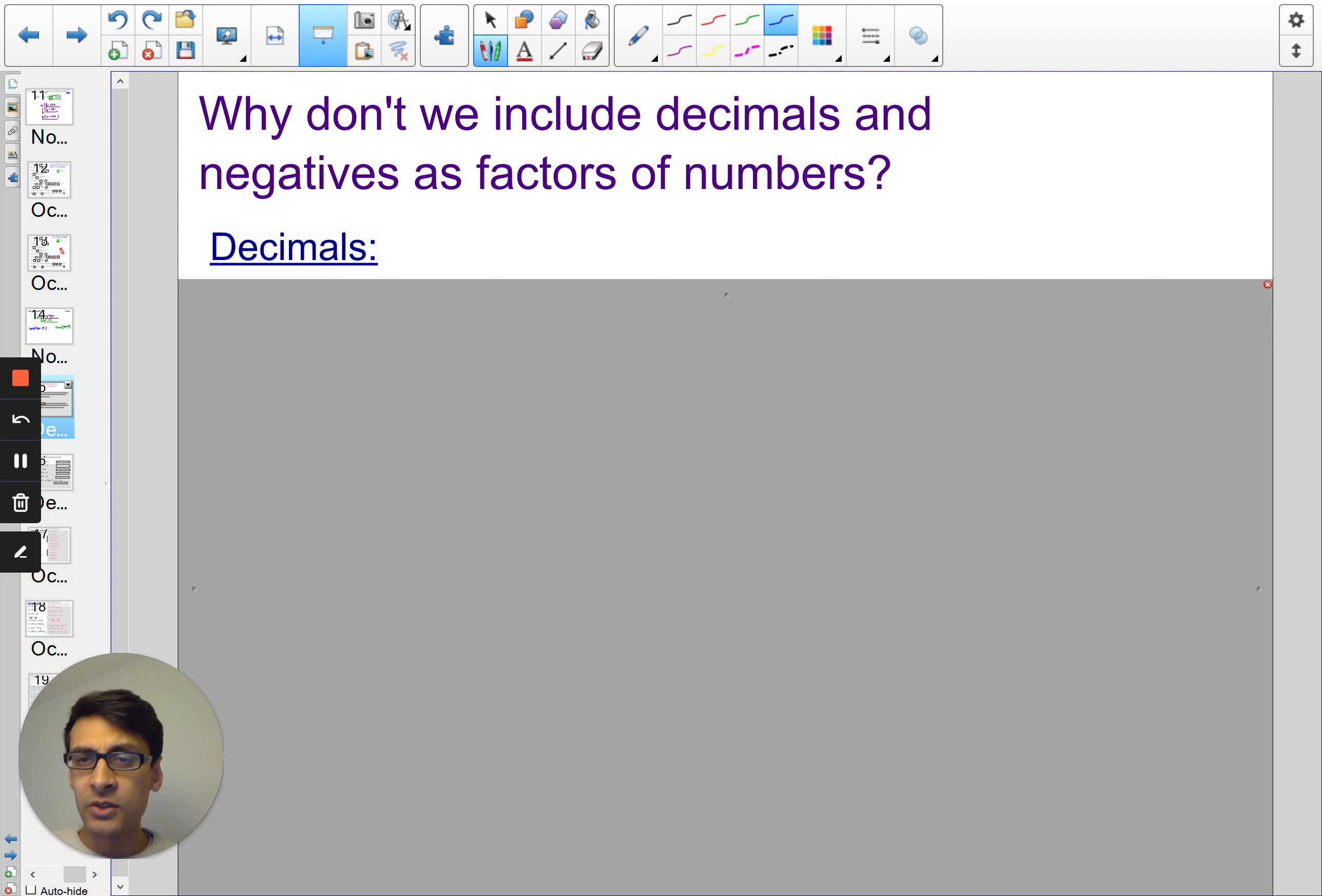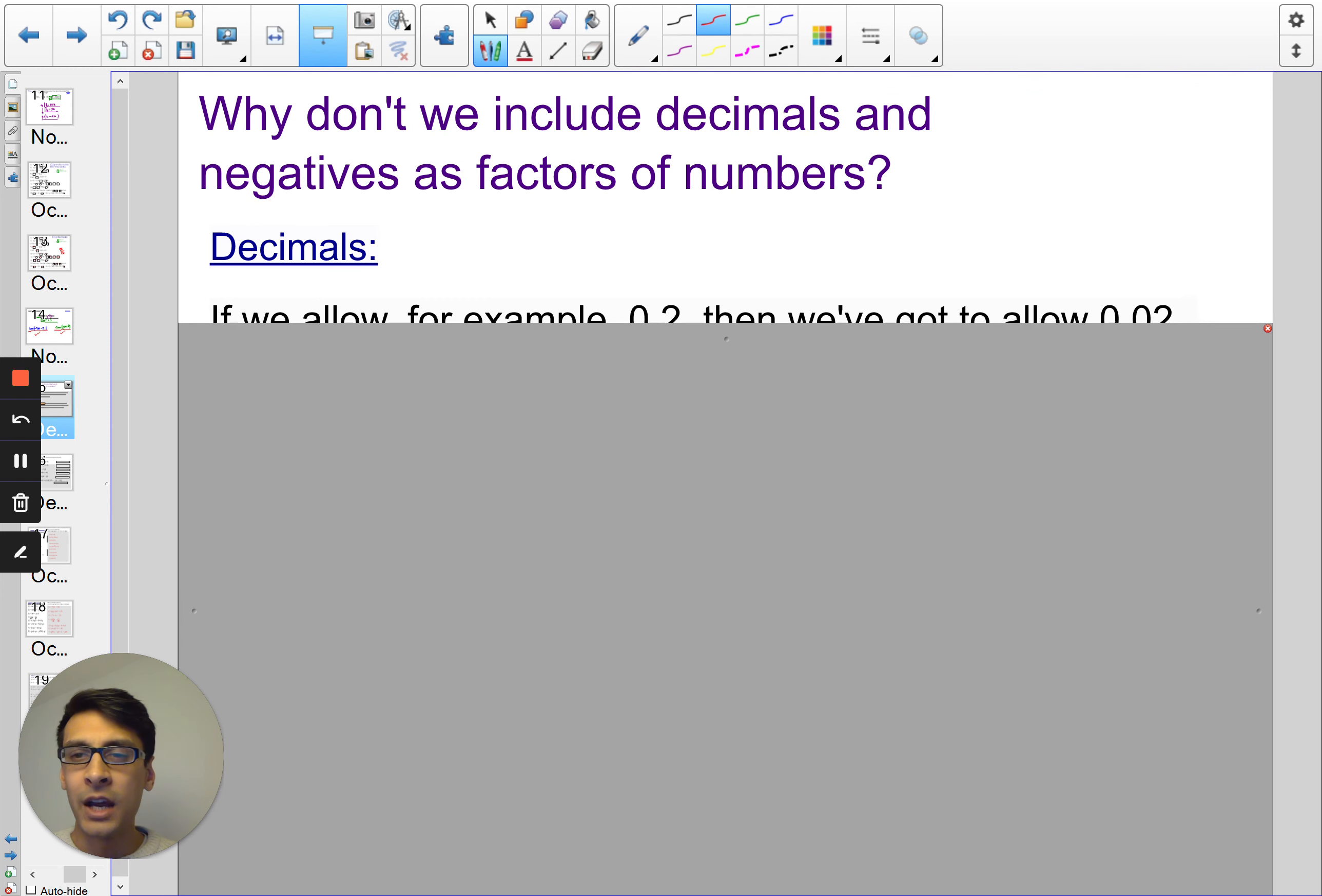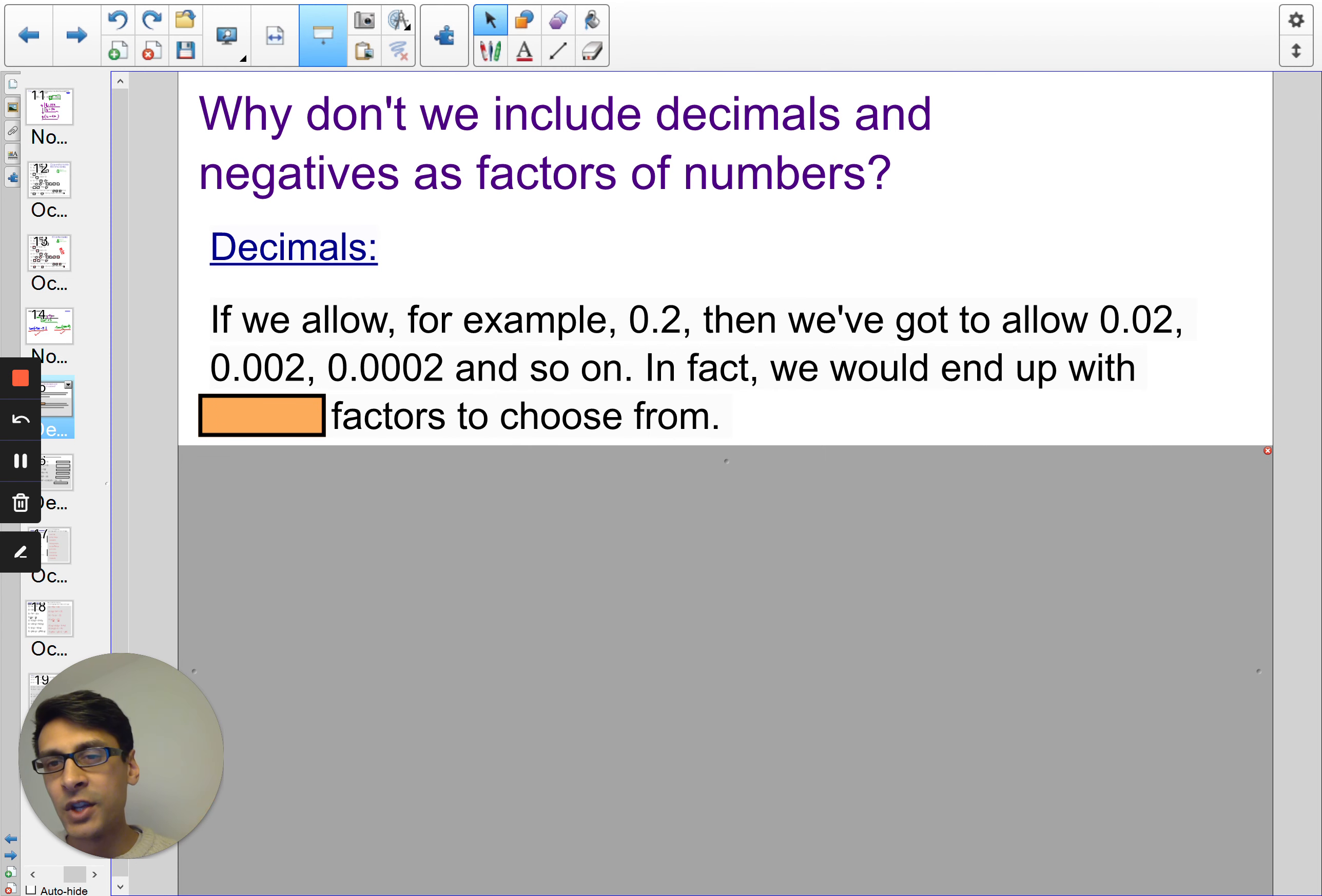So the answer is no. We don't have to always take out the negatives. So if you were to put this as your answer, it would be just as right as if you put that as your answer. Now, looking at decimals, if we, for example, allow 0.2, then you also have to allow 0.02 and 0.002 and so on. So, in fact, you'd end up with so many factors. Well, what do you think is the word behind that? We will end up with an infinite number of factors. So you'd never know where to stop.